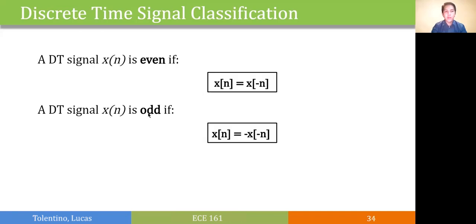For discrete time signals, we also classify them based on their symmetry. We say that a discrete time signal x of n is even if it is symmetric with the y axis, or x of n equals x of minus n. And we say that a discrete time signal is odd if it is symmetric with the y equals x axis, or x of n equals the negative x of minus n.